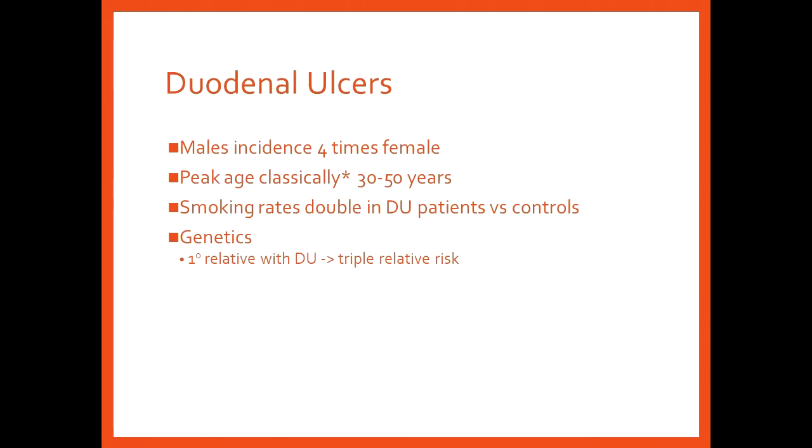In terms of duodenal ulcers, this is happening in males a lot more of the time. We're talking a ratio of four to one. The peak incidence classically is in this kind of 30 to 50 age gap. So a lot of people coming in, they're kind of just past that young adult phase towards middle aged. Smoking rates double in duodenal ulcer patients compared to people that aren't smokers. And then in terms of genetics, we think there is a genetic predisposition because those that have a first relative with duodenal ulcers have a triple relative risk of getting a duodenal ulcer themselves, which is really interesting.